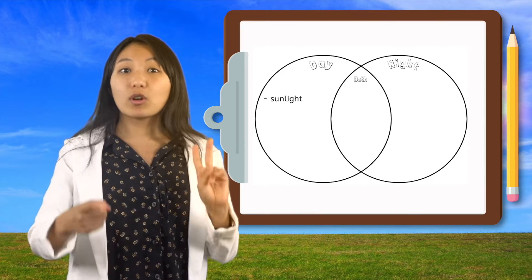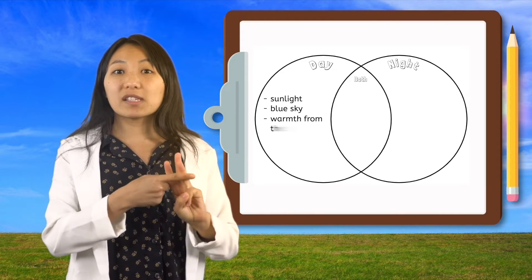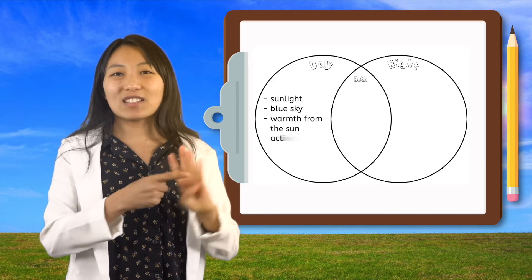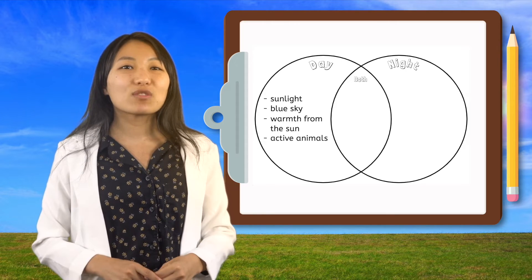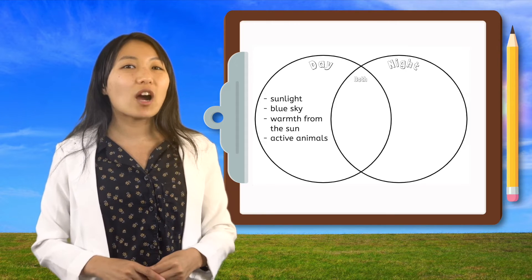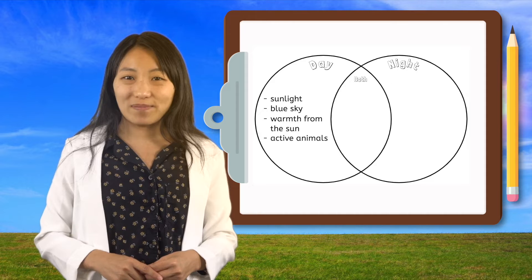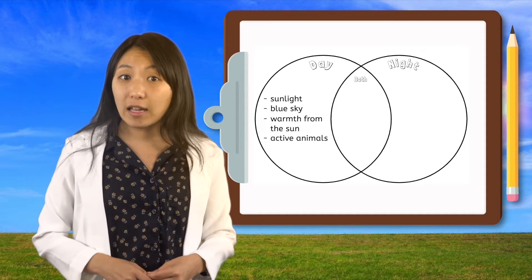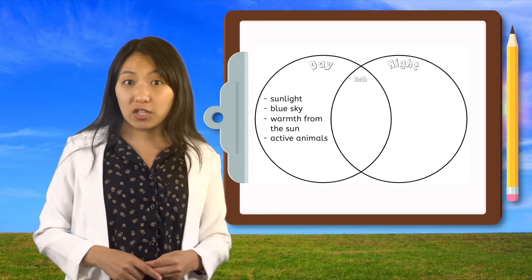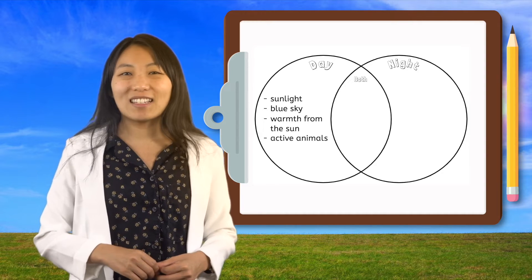Let's write down all of our observations: sunlight, blue sky, warmth from the sun, active animals. Pause the video here and take a moment to write down all of our observations in your Venn diagram. Feel free to add any extra observations you've made about daytime.